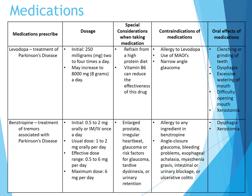For Benztropine, it is for the treatment of tremors associated with Parkinson's disease. The initial dose is 0.5 to 2 milligrams orally, intramuscularly, or intravenously once a day. The usual dose is 1 to 2 milligrams orally per day, with an effective dose range of 0.5 to 6 milligrams per day and a maximum dose of 6 milligrams per day. Special considerations include enlarged prostate, irregular heartbeat, glaucoma or risk factors for glaucoma, tardive dyskinesia, or urinary retention.